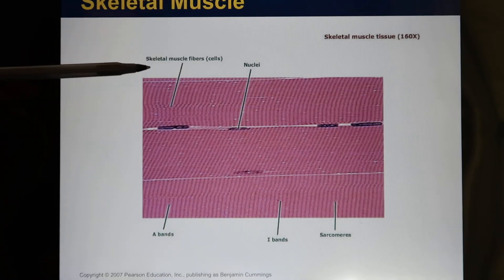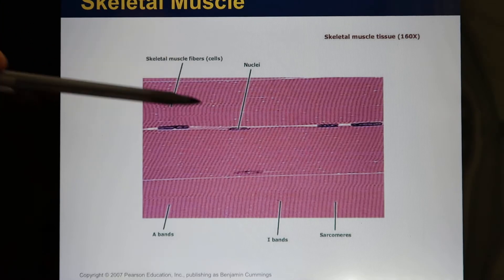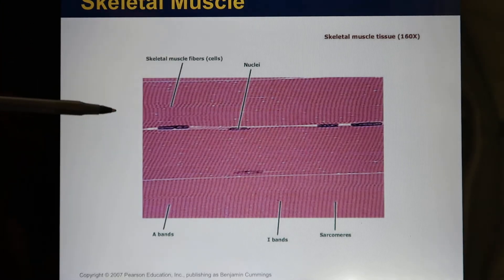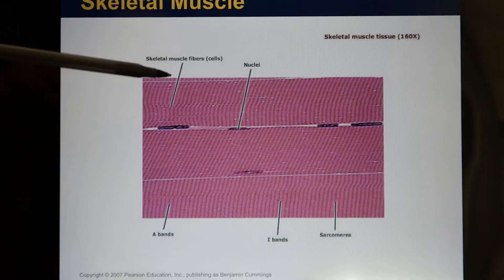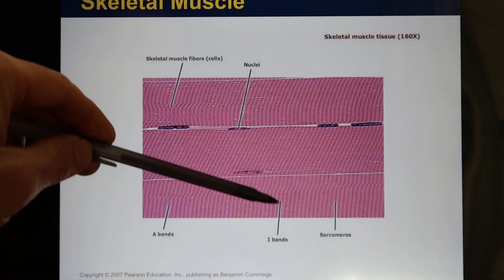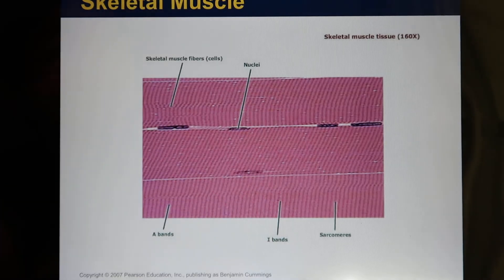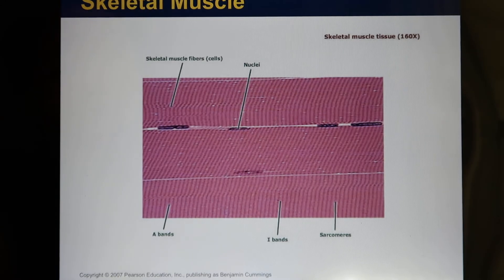The third characteristic: you find they have light and dark bands — we call this the striated pattern. The dark band is called the A-band, and the light one is called the I-band. This tells you their microfilaments are lined up well, so they can produce a lot of power. These are the characteristics of skeletal muscle.